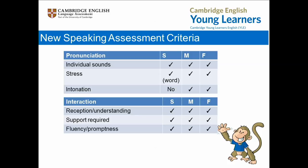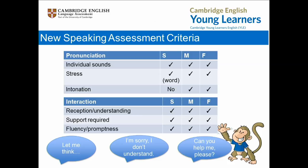There are no differences across the three levels on the interaction criteria. Examiners look at a candidate's ability to understand and respond to them, the amount of help and support they need from the examiner to perform each task, and their fluency and promptness in responding — for example, is there a natural pause or does the candidate need a lot of time to formulate their reply, causing a breakdown in smooth communication? By introducing useful phrases such as 'I'm sorry I don't understand,' 'Let me think,' or 'Can you help me please,' and encouraging students to use them regularly, you can help your students internalise them and this will really help their interaction skills.